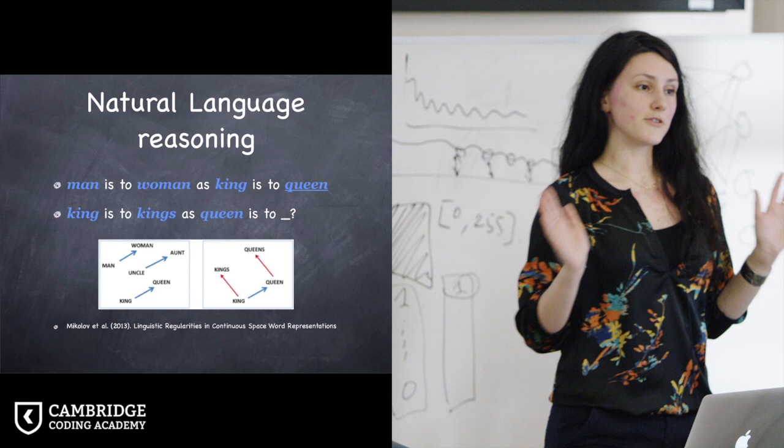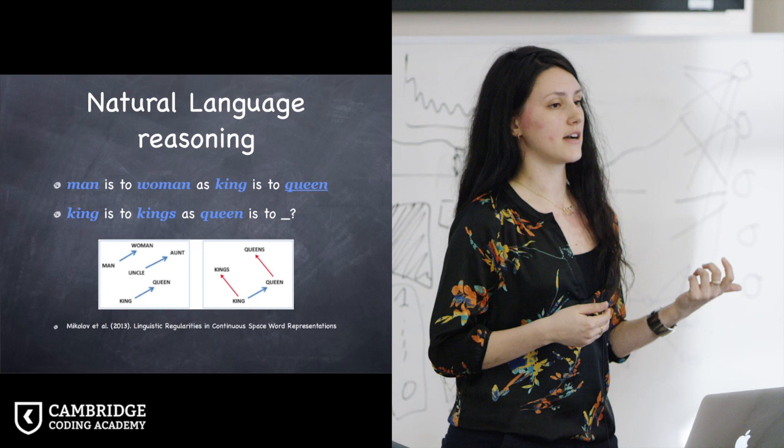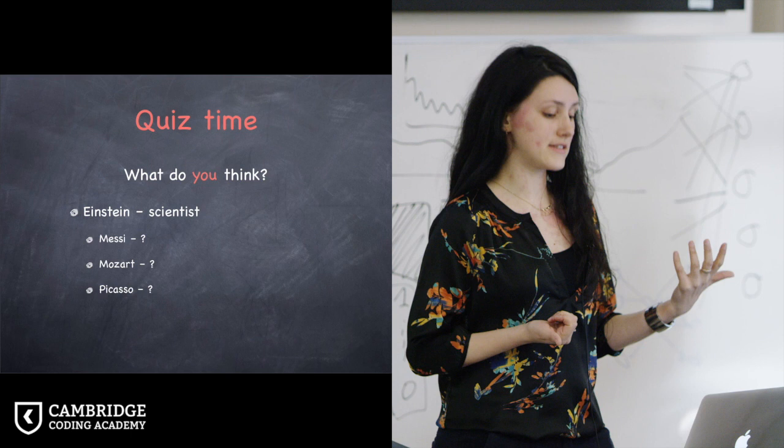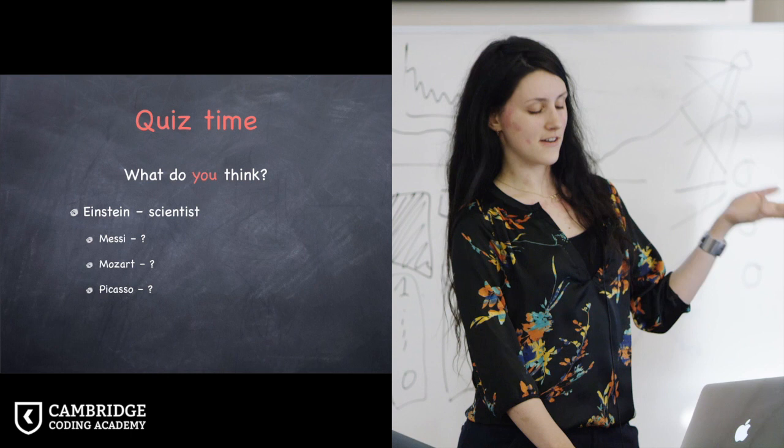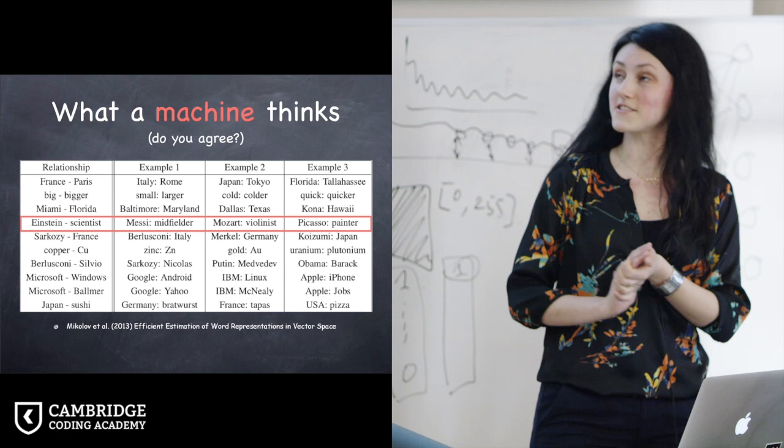Now, a bit of quiz time. If you know that there is some relation between the words Einstein and scientist, what do you think would be the word that will be predicted for Messi, for Mozart and Picasso? Any ideas? Player, composer, artist. Do you want to see what the machine predicted?